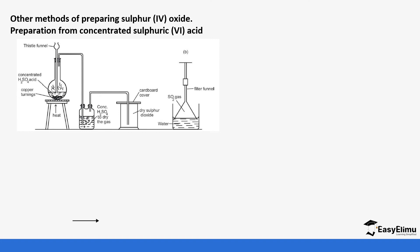If you want to prepare a solution of sulfur dioxide, instead of the drying tube with concentrated sulfuric acid, you dissolve the gas in water. A filter funnel is used — as we mentioned when discussing ammonia — because it increases the surface area for dissolution and also prevents suck-back.